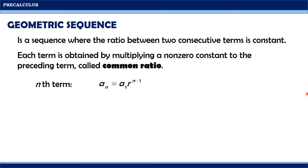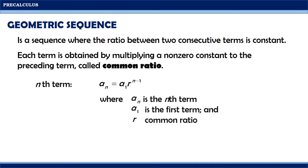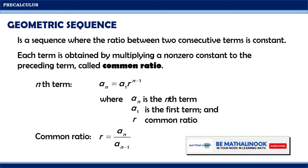Moreover, the nth term of a geometric sequence is denoted by a sub n equals a sub 1 times r raised to n minus 1, where a sub n is the nth term, a sub 1 is the first term, and r is the common ratio. The common ratio is equal to a sub n divided by a sub n minus 1. A sequence is said to be geometric if the operation on the pattern is multiplication or division.